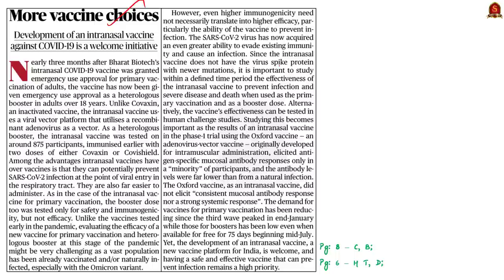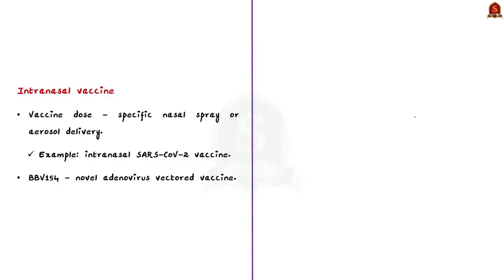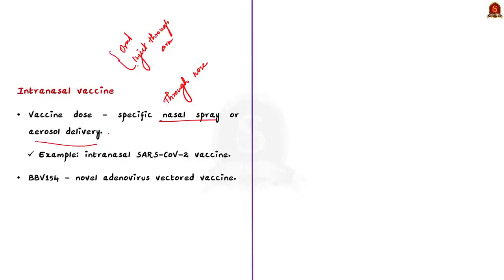The next editorial talks about the development of an intranasal vaccine against COVID-19. Three months ago, Bharat Biotech's intranasal COVID-19 vaccine was granted emergency use approval for primary vaccination of adults, and it is now given as a heterologous booster for adults over 18 years. The example for the intranasal SARS-CoV-2 vaccine is BBV154 — a novel adenovirus vector vaccine for COVID-19. As the name suggests, the vaccine dose is given through the nose — either via nasal spray or aerosol delivery.